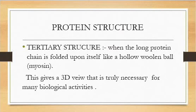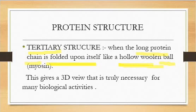Now let's talk about the tertiary level. When a long protein chain folds upon itself — when a complex chain of amino acids folds upon itself — it creates a very jumbled-up structure, like a hollow woolen ball. It wraps upon itself many times to form a three-dimensional structure. This is known as the tertiary structure, and this is very important for biological activities.